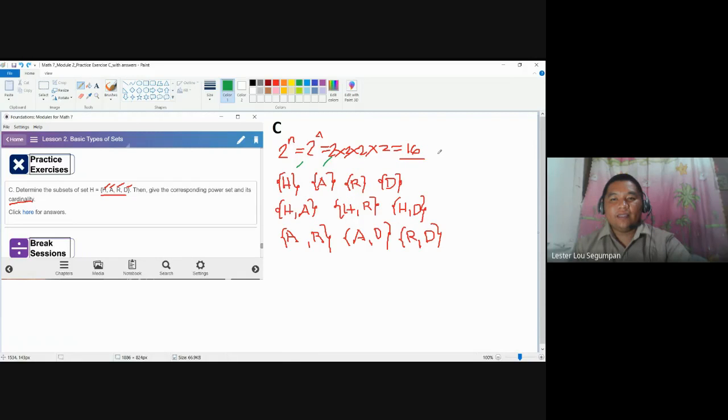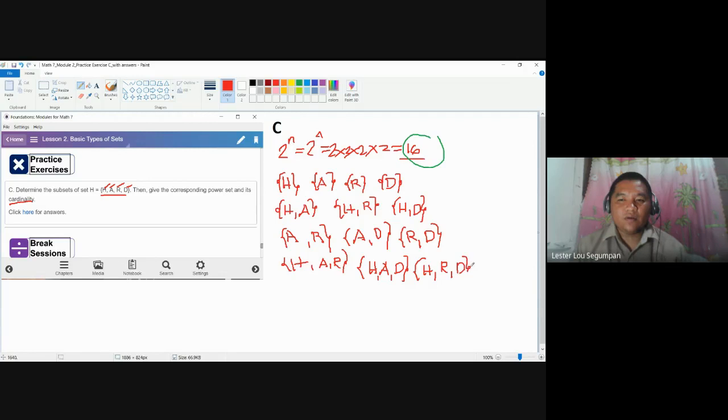So how do we write the 16 subsets? After sets containing 1, sets containing 2 elements, let's go to sets containing 3 elements. So you have h, a, and r. And then h, a, make sure to separate with a comma, d. You have h, r, and d. And finally, you have a, r, d. So these are the next four. So 14.